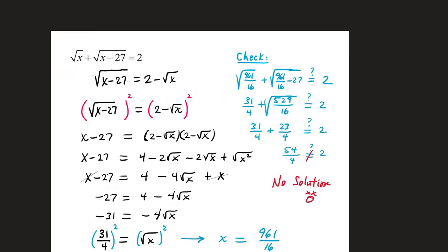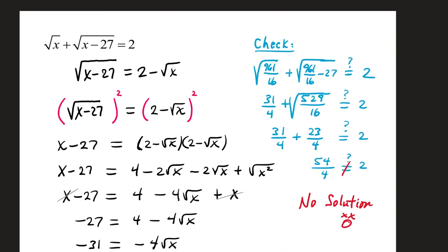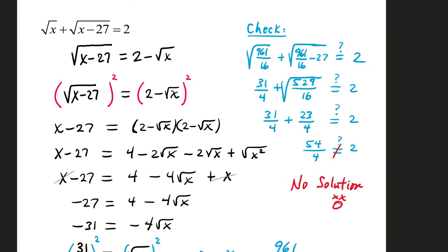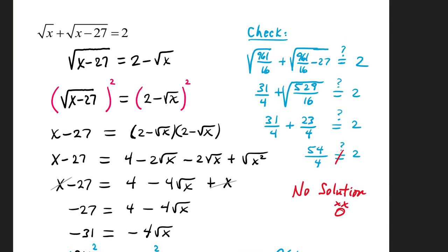Our last example, we have square root of x plus square root of x minus 27 equals 2. This problem has two radicals in it, so I'm going to isolate the more complicated one. So let's subtract a square root of x. Once you get your more complicated radical isolated, square both sides to remove your square root.